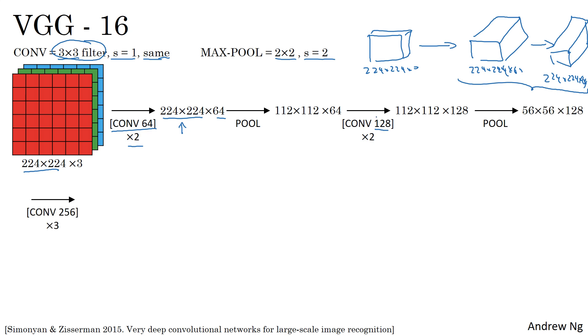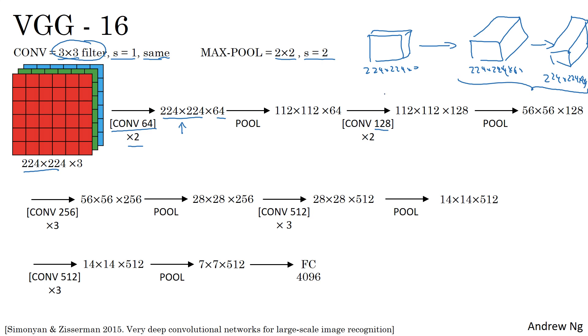And now three conv layers with 256 filters. Then a pooling layer, and then a few more conv layers, pooling layer, more conv layers, pooling layer. Then it takes this final 7 by 7 by 512, feeds it to a fully connected layer, fully connected with 4096 units, and then a softmax output, one of a thousand classes.